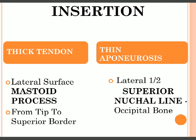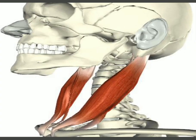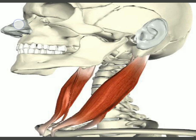The muscle also inserts into the superior nuchal line on the occipital bone — specifically the lateral half — via a thin aponeurosis, which is a flat tendon. The thin aponeurosis extends behind and gets inserted into the lateral half of the superior nuchal line, the portion located towards the ear.